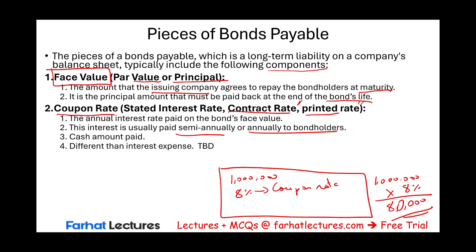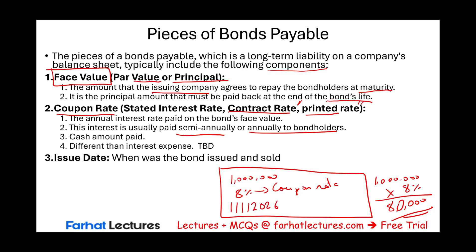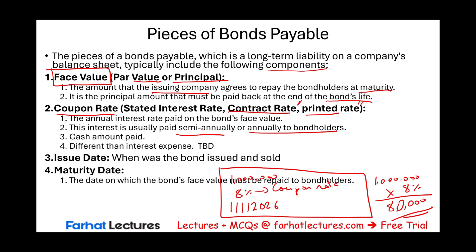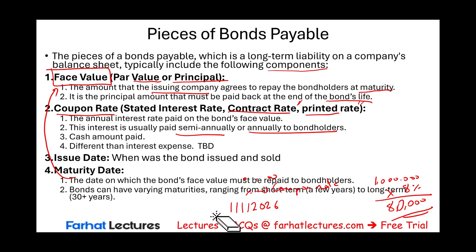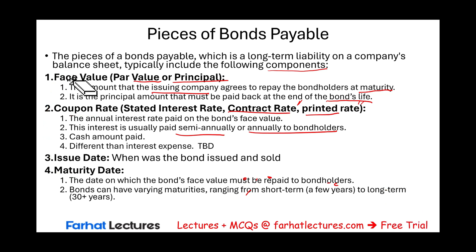There is also an issue date — for example, 1-1-2026, when the bond is issued. Then there is a maturity date — when the bond matures, which could be 5 or 10 years out — the date on which the bond face value must be repaid. For instance, the company will need to pay back $1 million to the bondholders at maturity. Bonds can have varying maturity dates ranging from short-term, a few years, to long-term, 30 years or more.